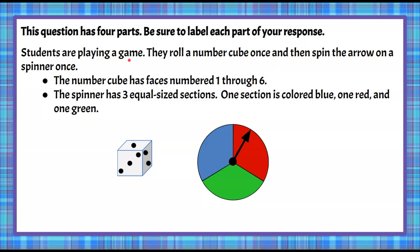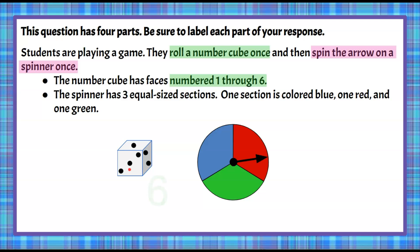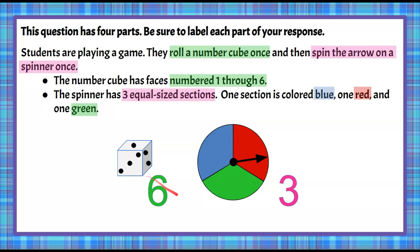We have students who are playing a game. They're going to roll a number cube once and then spin an arrow on a spinner once. The number cube has faces numbered one through six, so there are six different outcomes. The spinner has three equal-sized sections, meaning there's an equally likely chance it will land on blue, red, or green — three possible outcomes.